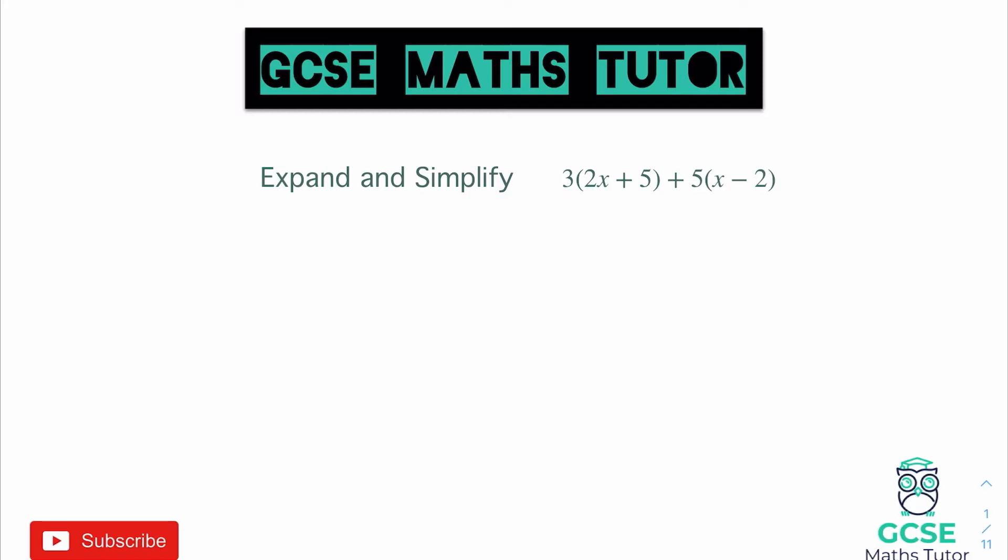We'll start by just looking at this first bracket to start with. We need to multiply what's in the bracket by three. The first thing we're going to do is three times the 2x and that becomes 6x. Then we're going to multiply the five by the three as well and that's a plus five, so that's going to be three times five which is plus 15.